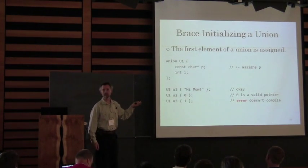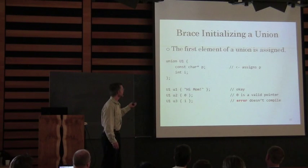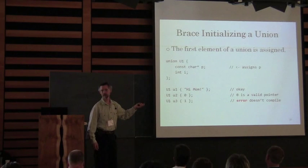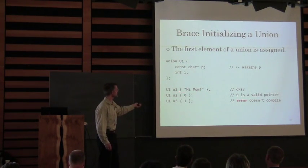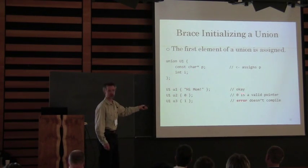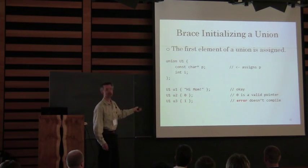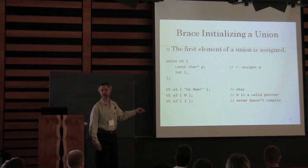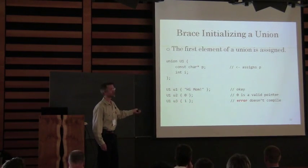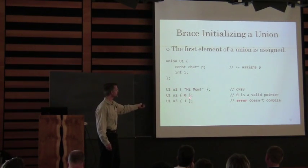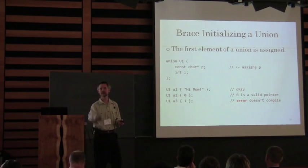If you've got a union, unions also brace-initialize, and what they'll do is brace-initialize the very first member of the union. In this case, we've got a char star as our first element. I've got 'hi mom' — that goes in just fine. If I want to initialize the union with a zero, that's also fine because zero is a legitimate pointer. But if I try to drop a one in there, the compiler will say no.